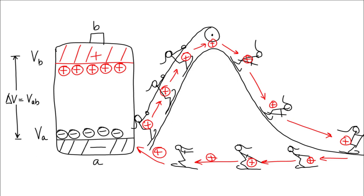This is the same for charges. As long as the battery has a difference in potential between its terminals, it can continue to lift positive charges from low to high potential as they circulate round and round in our circuit.